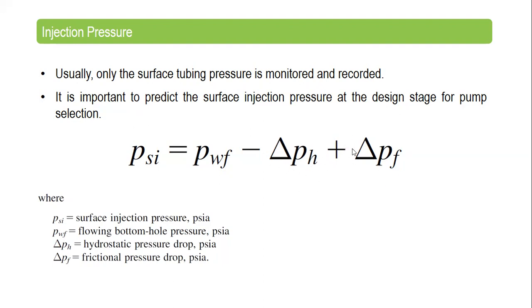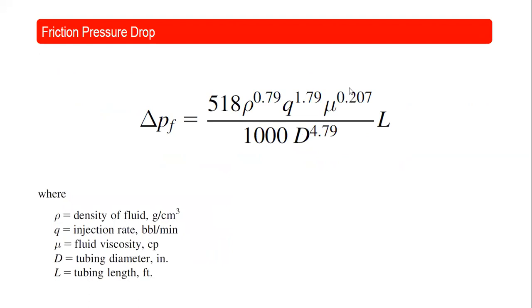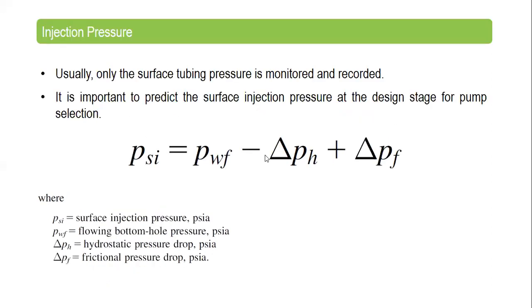You also need to calculate the frictional pressure drop, which can be calculated using a standard formula. The required inputs are the density of your fluid (the acid mixture), the injection rate (treatment rate), the fluid viscosity of the solution or mixture, the tubing diameter, and the tubing length. Using this formula you can calculate your friction pressure drop.